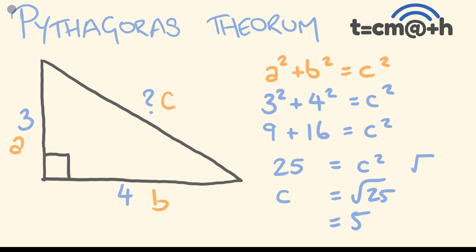This unknown side is equal to 5. This is a fairly common triangle — it's a Pythagorean triad. We have 3, 4, and 5. You're going to see this quite often, and multiples of these work too.